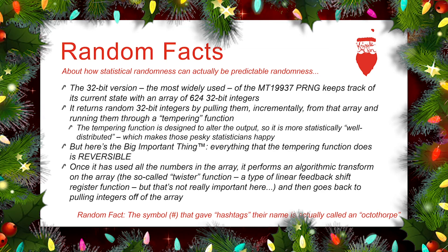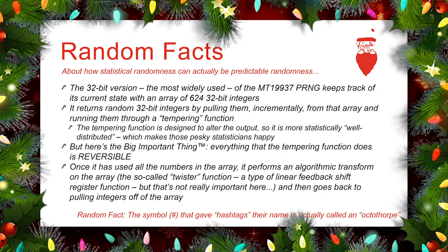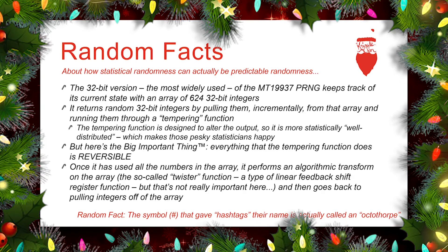It goes through that list of 624 32-bit integers, pulls them out one by one, and then hands them back to the user as the pseudo-random number after it's been pushed through what's called a tempering function. This tempering function is designed to make the output more statistically well distributed, and this is part of the algorithm developed back in 1997. The really important thing here is that everything that tempering function does is reversible. We're going to talk in a minute about why that's very, very important.